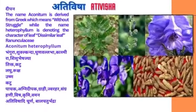Dravya Naam: Ativisha. Gan: Bata Karma — Deepan, Lekhaniya, Arshoghan, Shirovirachan. The name Aconitum is derived from Greek, meaning 'without struggle,' while the name Heterophyllum denotes the character of the leaf — dissimilar leaf. Family: Ranunculaceae.